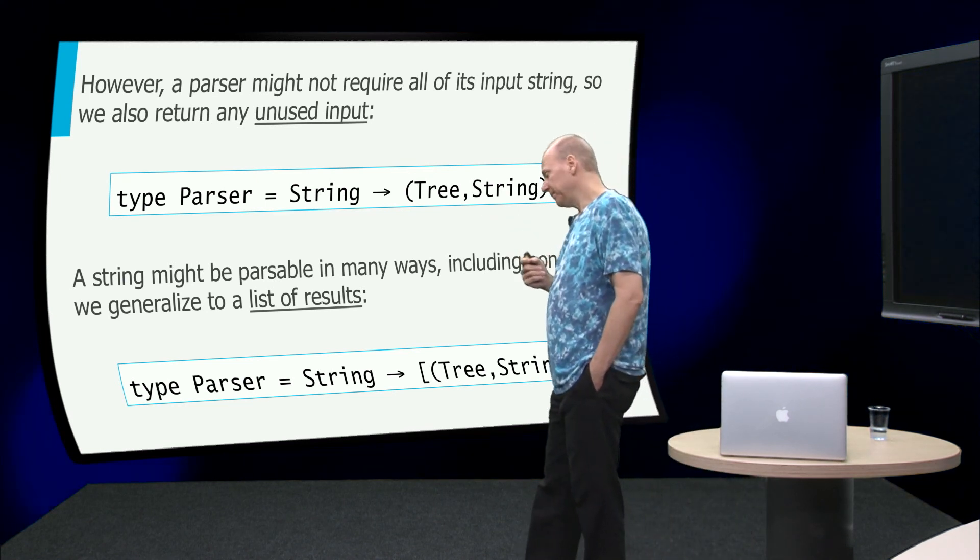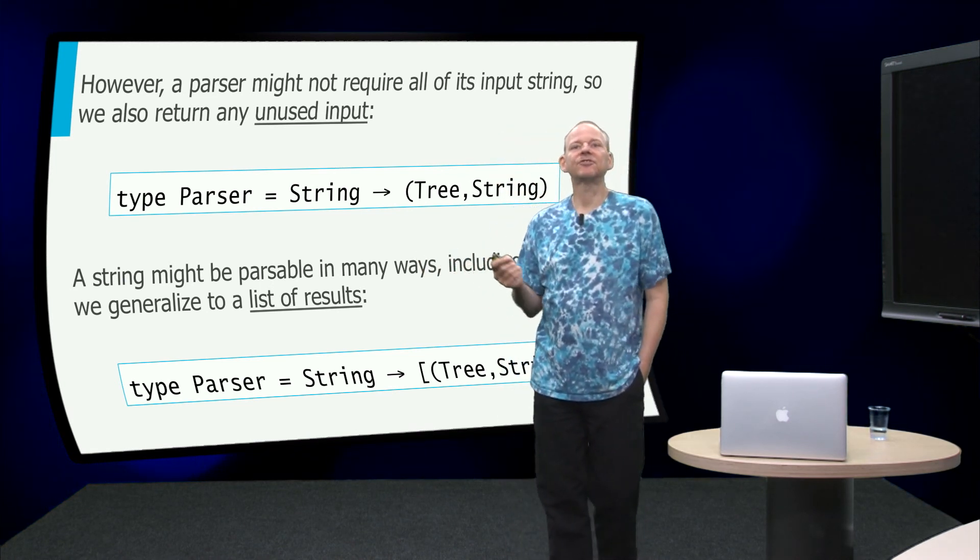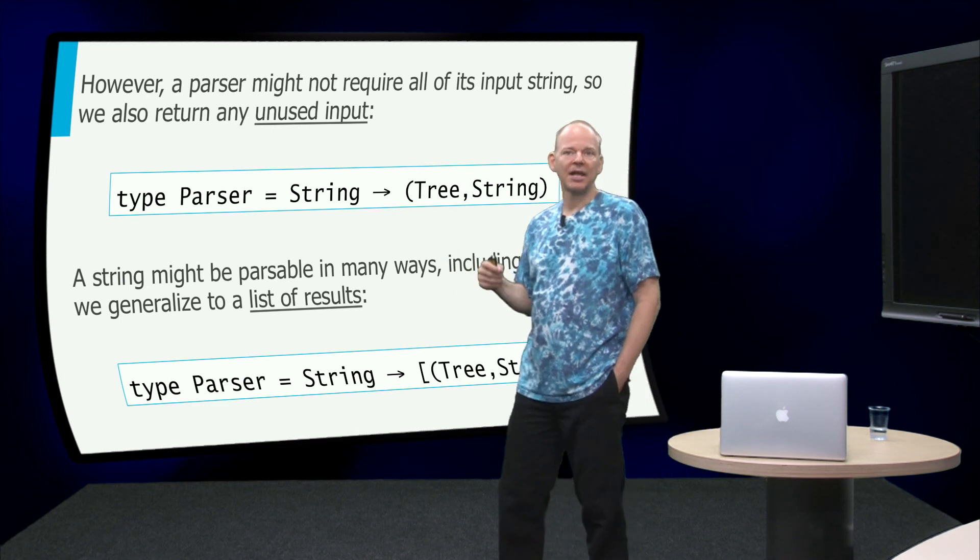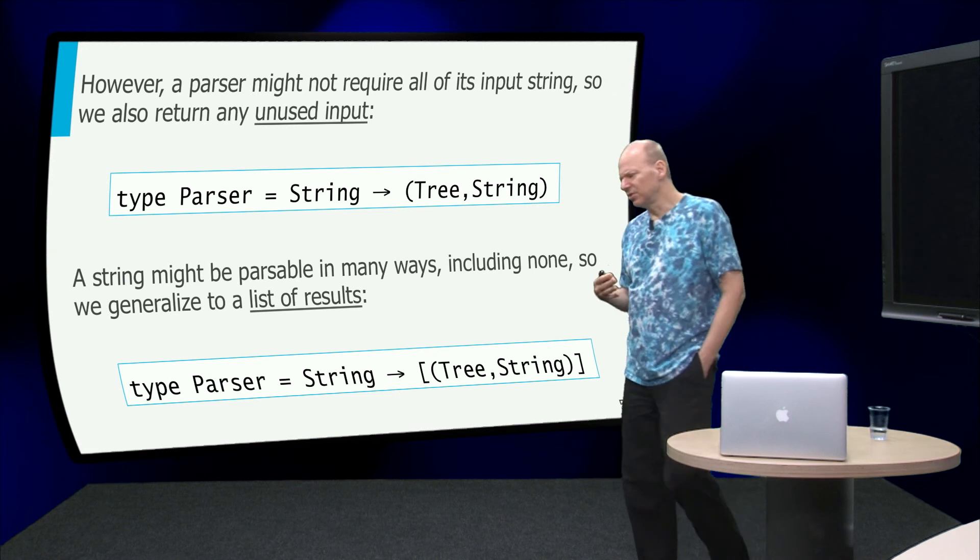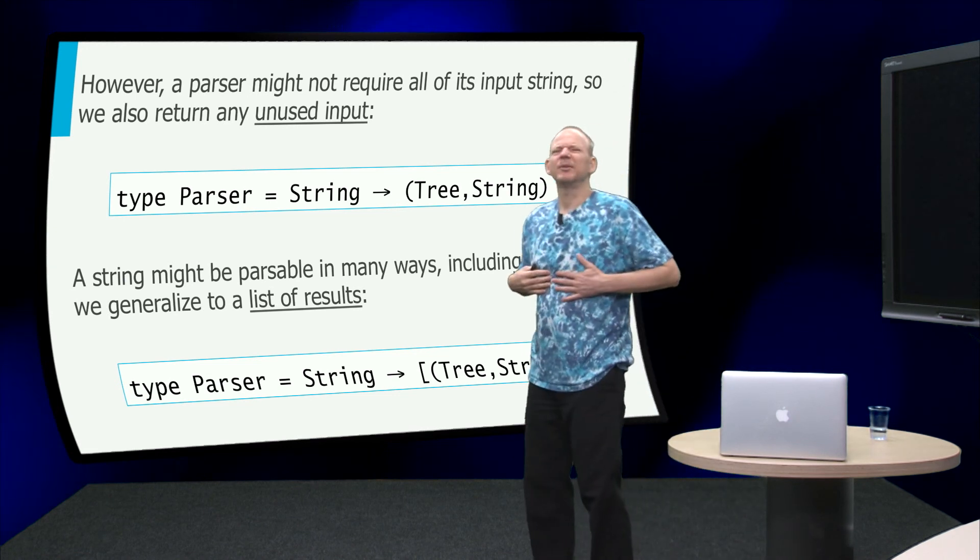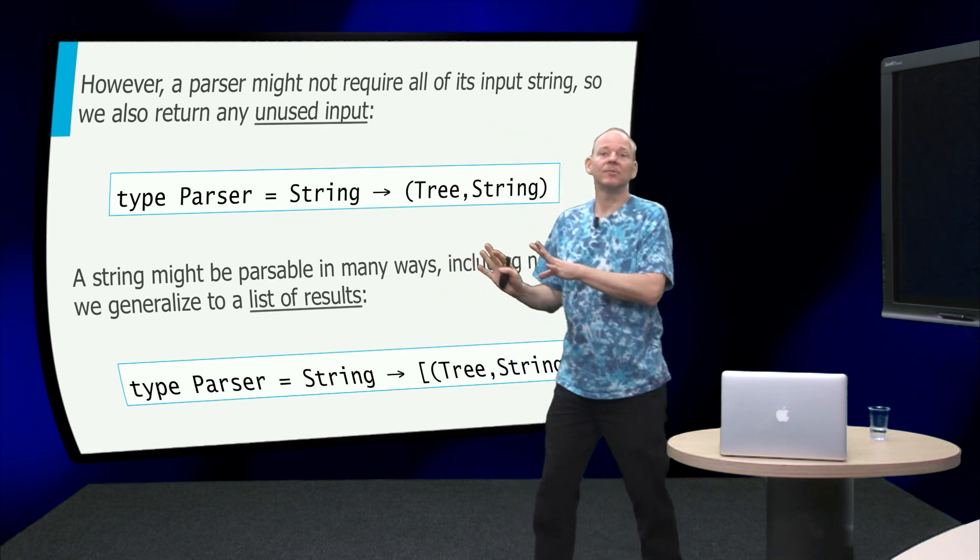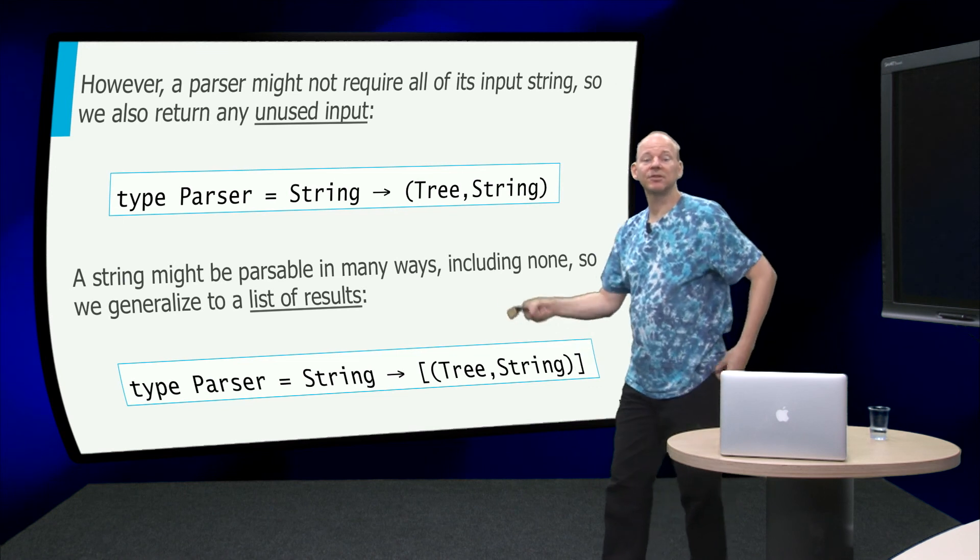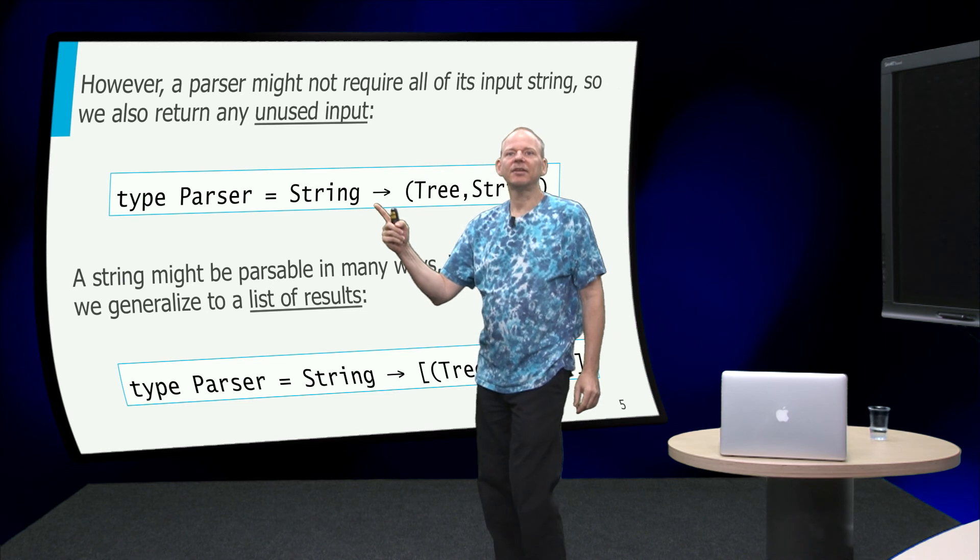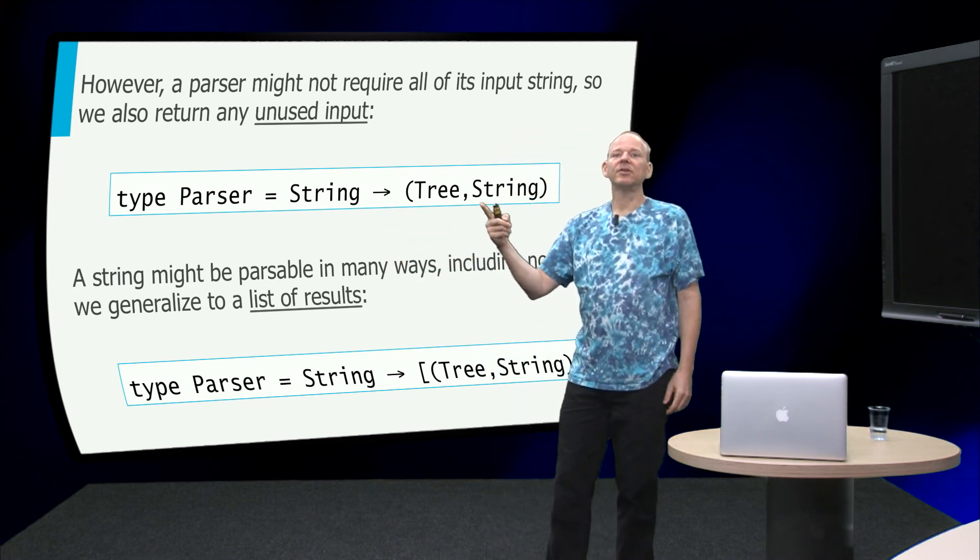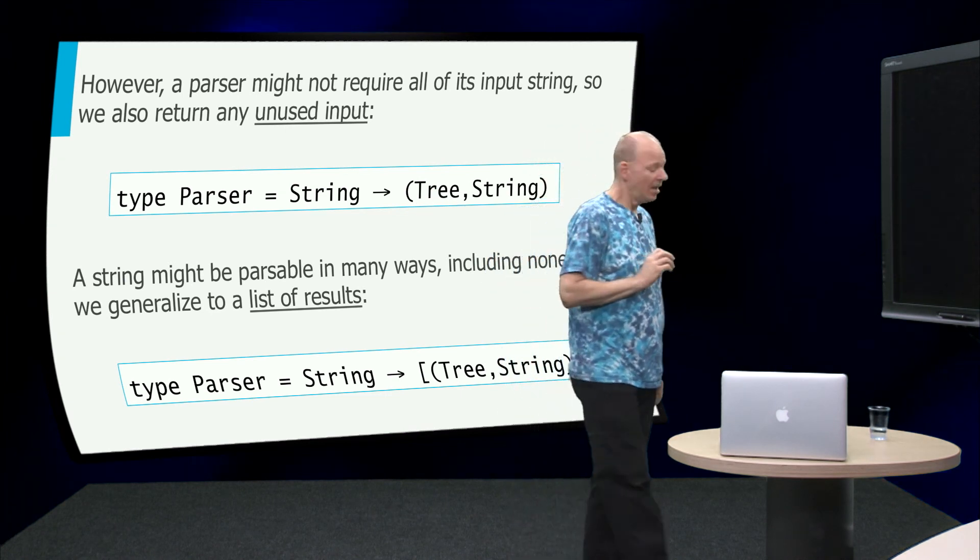Now, we are going to generalize this type a little bit to make it easier to construct a parser. So first of all, when we parse a string, we might not need the complete string. So there might be some string left over. So the type of parsers, we are going to refine it a little bit and we say it will take a string and it will return a pair of a tree and the rest of the string.